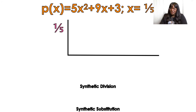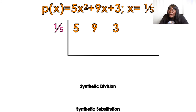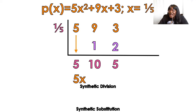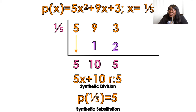You need to try this one on your own — pause the video. Bring down the 5. What's one fifth of 5? 1. 9 plus 1 is 10. What's one fifth of 10? 2. 2 plus 3 is 5. My original problem was an x squared, so I take it down to just an x. Use those coefficients — the last number is always my remainder. If your teacher is asking you to do synthetic substitution, P of negative one-fifth equals 5.